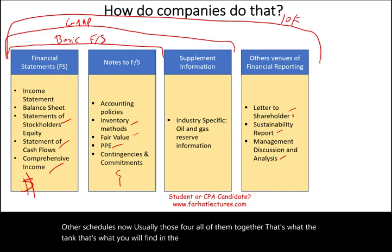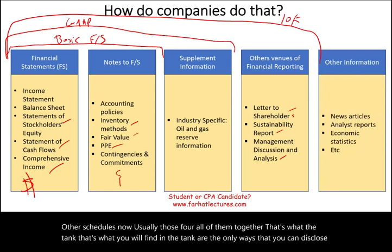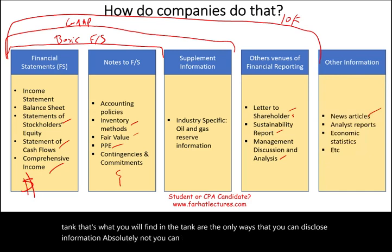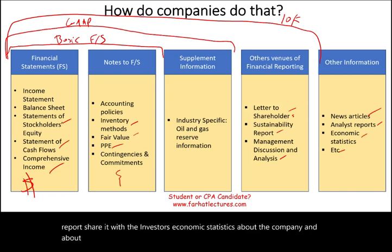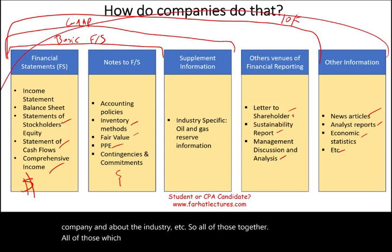Are these the only ways you can disclose information? Absolutely not. You can have press releases, news articles, analyst reports, share it with investors, economic statistics about the company and the industry, and so on. All of those together illustrate the concept of the full disclosure principle: give as much information as possible to the users. The information also has to be understandable and useful.